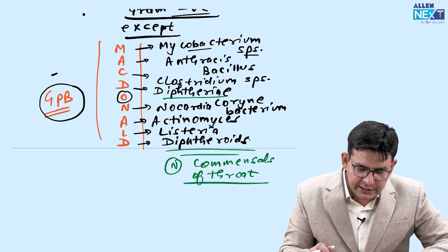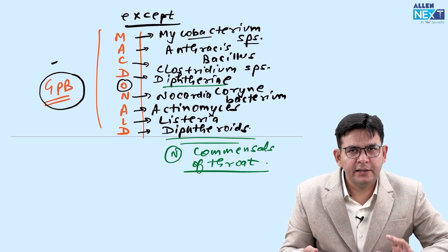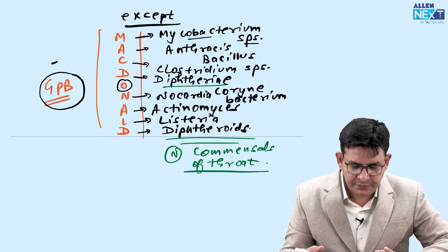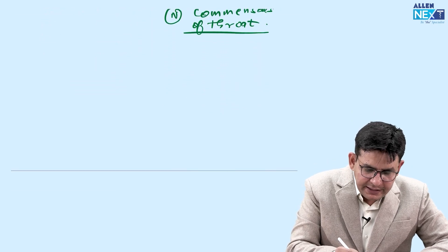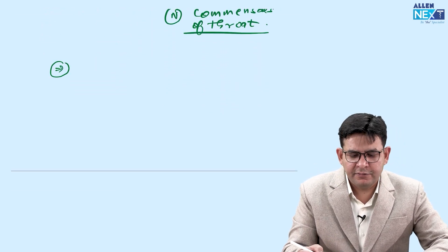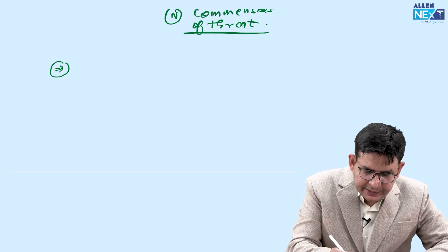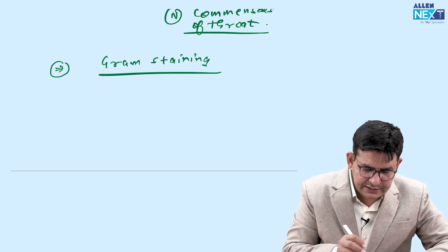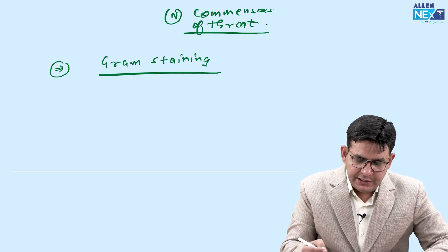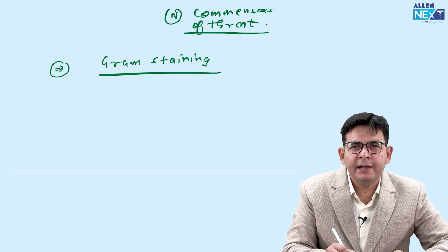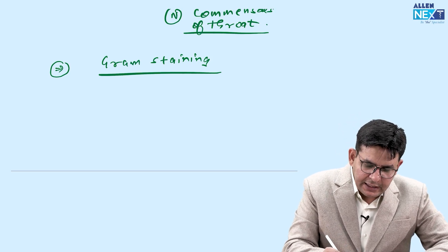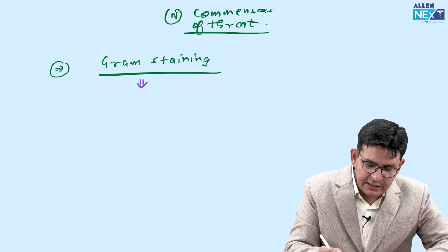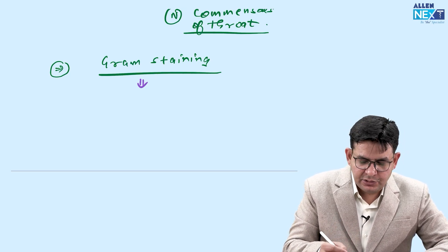After knowing these two mnemonics, your life becomes simple regarding gram-positive cocci, gram-negative cocci, gram-positive bacilli, and gram-negative bacilli. Now you should have an idea of what gram staining is. This procedure was discovered by a famous scientist Christian Gram and is a frequently asked question in various examinations.